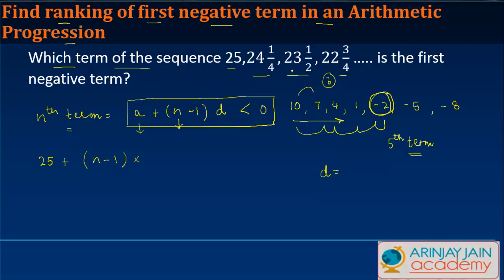So I would do 24¼, which is 97/4, minus 25. If we take 4 as the LCM we get 97 - 100, which is -3/4. So the common difference here is -3/4 times -3/4, and this is less than 0.